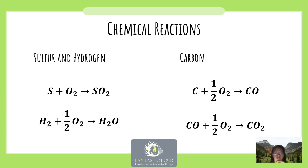Nearly all sulfur burns into sulfur dioxide (SO₂) and nearly all hydrogen burns into H₂O. Carbon is burned and forms either carbon monoxide (CO) or carbon dioxide (CO₂). Carbon monoxide can form when there is insufficient oxygen during combustion, or even in the presence of stoichiometric or excess oxygen due to incomplete mixing and short combustion time. Combustion of coal produces pollutant emissions including unburned carbon, carbon monoxide, unburned hydrocarbons, sulfur dioxide, ash, and nitrogen-oxygen compounds. These effects on the environment were discussed in the previous section.